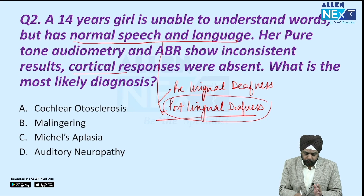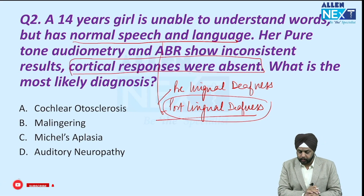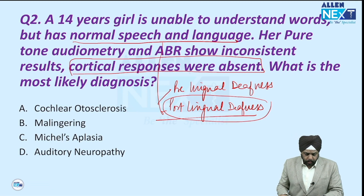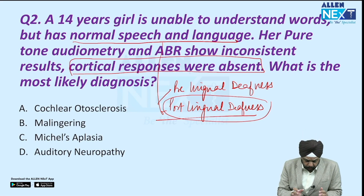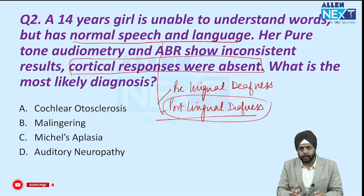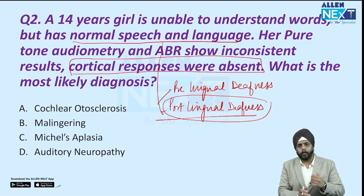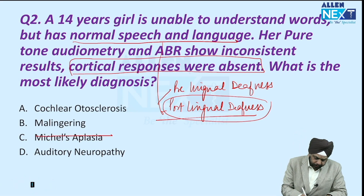Her pure tone audiometry and ABR show inconsistent results, and cortical responses were absent. What is the most likely diagnosis? The choices are cochlear otosclerosis, malingering, Michel's aplasia, and auditory neuropathy. Michel's aplasia is absence of the cochlea — that's a congenital anomaly. If that were present, she would not have developed any language at all. So Michel's aplasia is definitely ruled out.